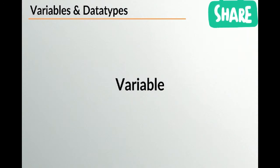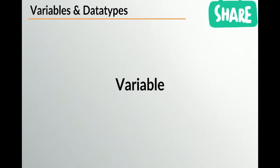Our next topic is variables and data types. These are two very important words to know in programming, so if you're new to programming do pay attention. A variable, according to Wikipedia, is a storage location paired with an associated symbolic name which contains some known or unknown quantity of information referred to as a value.